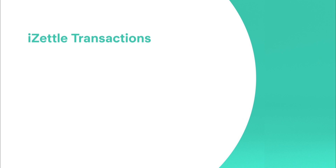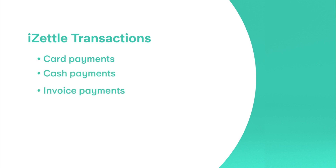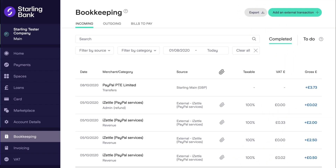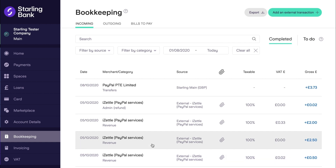As the toolkit supports cash accounting, for each day that you have transactions processed through iZettle — whether those are payments taken by card, by cash, through invoices, or whether they are refunds or advance down payments — the integration with Starling will automatically surface these as external transactions in the bookkeeping section of the toolkit. The toolkit will then group and summate the day's transactions based on the iZettle transaction type.